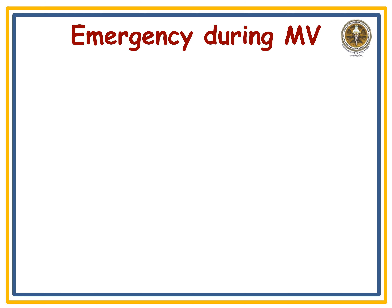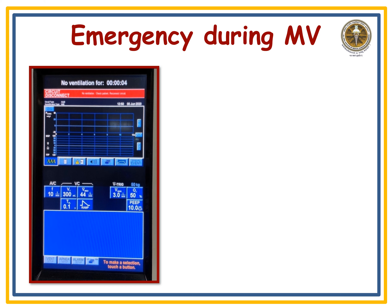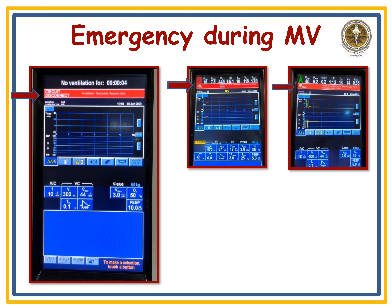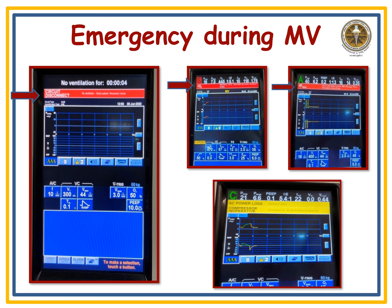During mechanical ventilation you may face emergency situations — if not attended to promptly, these may lead to mechanical ventilation failure. Problems are identified through alarms. When there is a problem, the ventilator gives alarms in the form of colored lights and written instructions on the screen. Red alarms include: circuit disconnect, low oxygen supply, and high peak pressure. Yellow alarms include: AC power loss and compressor inoperative.